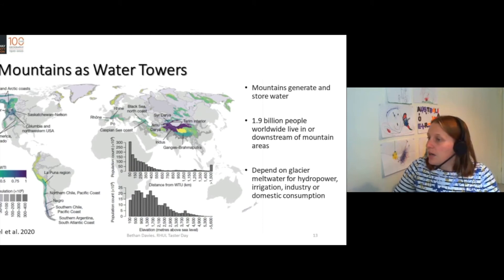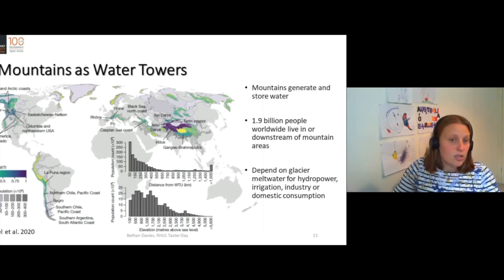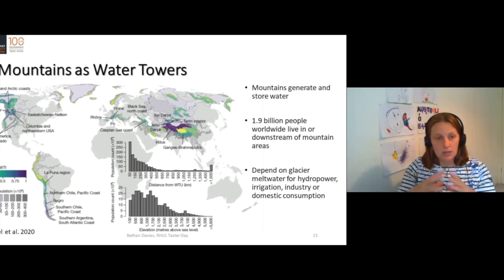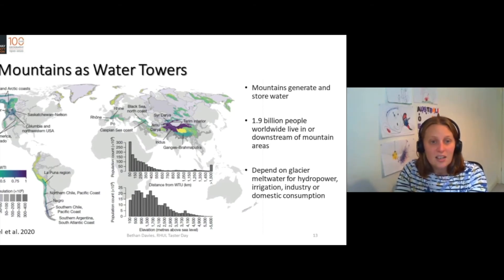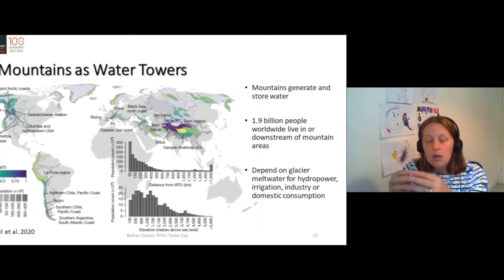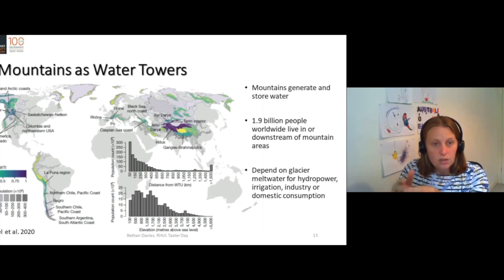Then we have the Himalaya. The global glacier volume there is smaller — the amount of ice being lost each year is less because the volume of ice is less than it is in Alaska or Patagonia. But it's really, really important because these water towers are producing water that is highly in demand from the downstream societies.